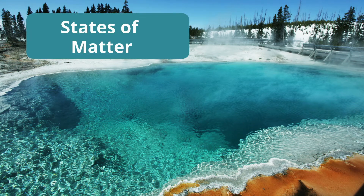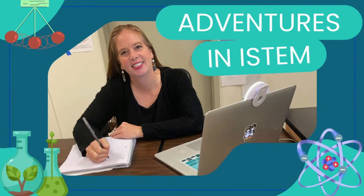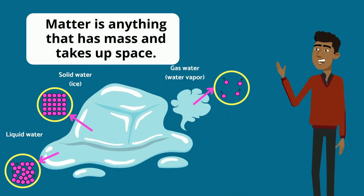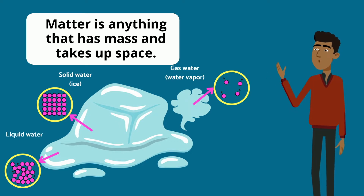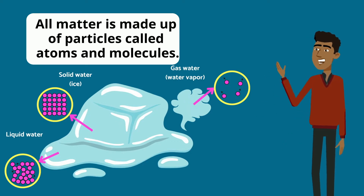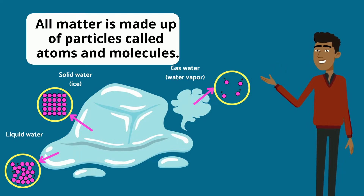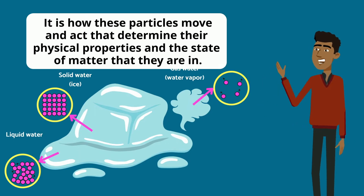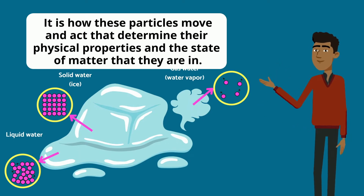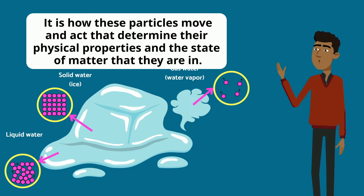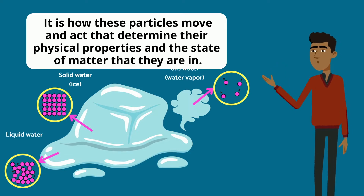The States of Matter. Matter is anything that has mass and takes up space. All matter is made of particles called atoms and molecules. It is how these particles move and act that determine their physical properties and the state of matter that they are in.